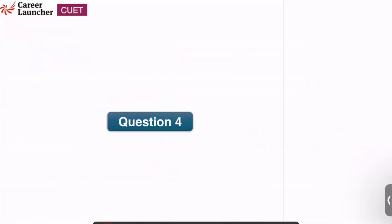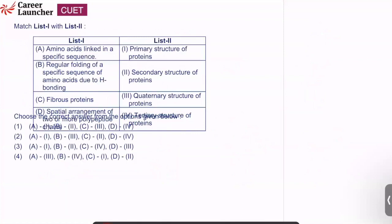Question number 4: match list 1 with list 2. Amino acids linked in a specific sequence — that is the primary structure of proteins. Regular folding of a specific sequence of amino acids due to hydrogen bonding — that is the secondary structure. Fibrous proteins correspond to the tertiary structure. Spatial arrangement of the protein is the quaternary structure. So A is 1, B is 2, C is 4, D is 3; answer is option 3.